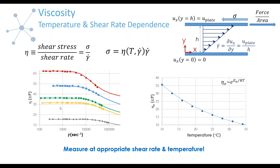Bear in mind that when you're setting up experiments, you want to set them up properly. Another thing to think about is the temperature dependence — viscosity will depend on temperature as well. Typically, over certain ranges of temperature, it will have an Arrhenius or exponential dependence with inverse temperature. If what you need to know is behavior at 20°C and you're measuring at 25°C, this is nearly 5 centipoise difference, or a 25 to 30 percent difference in viscosity. So it's important to pick your temperature and shear rate according to the application to get the best prediction.